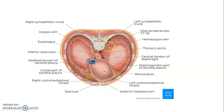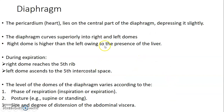This cross-section through the thoracic vertebra region shows the structures that perforate the diaphragm: the aorta, esophagus, and inferior vena cava — they have apertures in the diaphragm. The central tendon of the diaphragm is where the heart sits in the pericardium. The pericardium lies at the central part, slightly depressed, and the diaphragm curves superiorly to form right and left domes. The right dome is higher because of the position of the liver on the right.